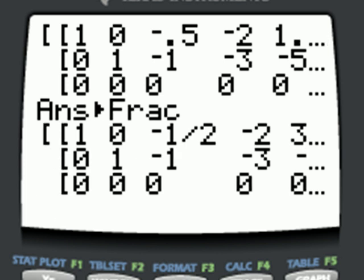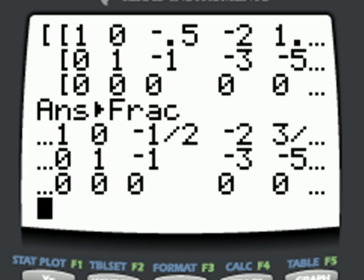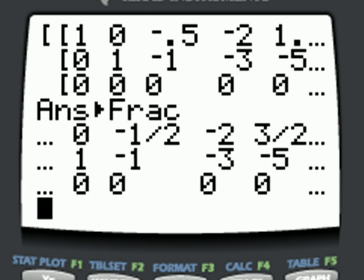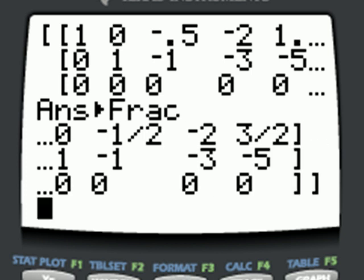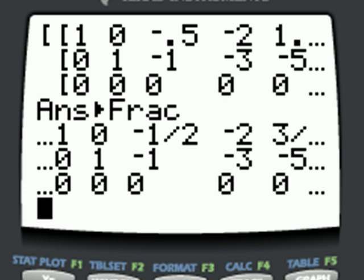So our reduced row echelon form actually doesn't look quite as nice as some of the others we have seen. And the reason that is is because we didn't actually get a single unique solution. So let's copy this down into our notes and then we can write down what it means.